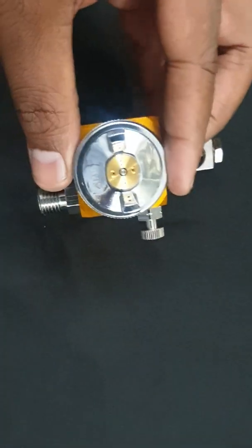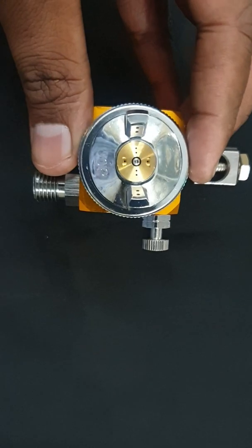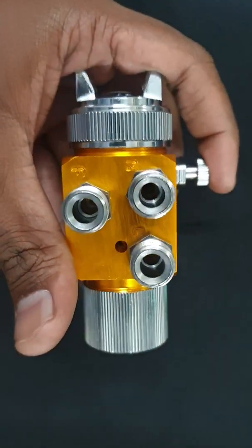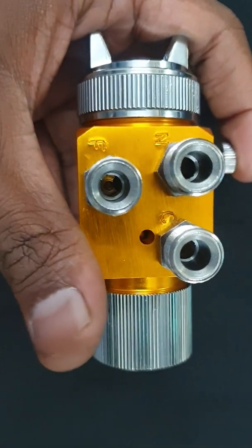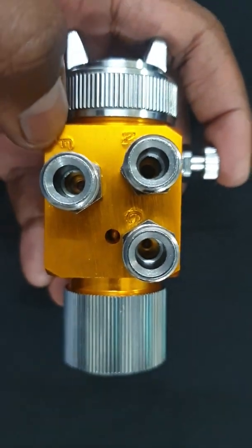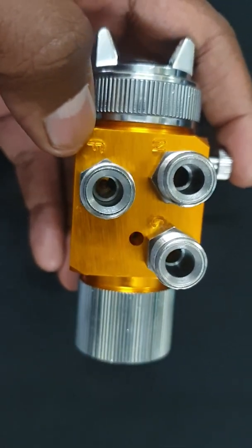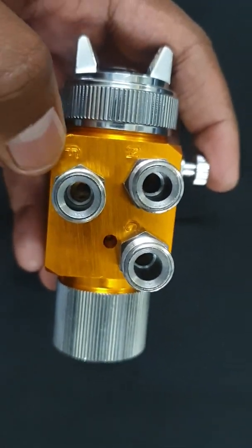As you see here, it is the air cap of the spray gun. There are three inlets. F stands for fluid - that is paint, or release agent, or adhesive. Whatever you want the spray gun for spraying.